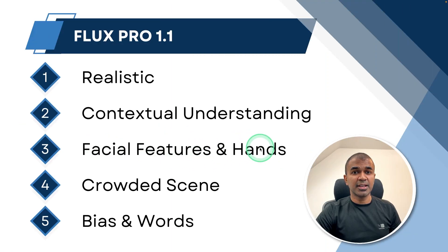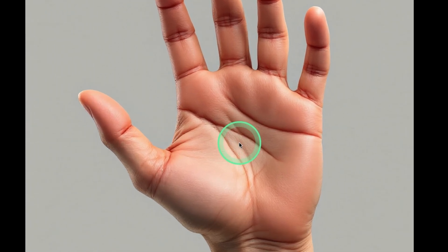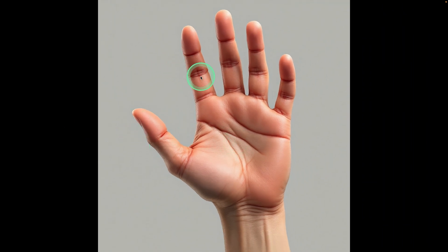Next, facial features and hands. The prompt: a person's face showing a subtle expression of doubt with a raised eyebrow and a slight smirk. The eyebrow is raised but not that much, and the subtle expression of doubt can be seen. For hands: a human hand with realistic wrinkles and veins positioned to display all five fingers in a natural resting state. The fingers don't quite look like a resting state and are okay but not very realistic — though it clearly creates five fingers, which the previous model struggled with.